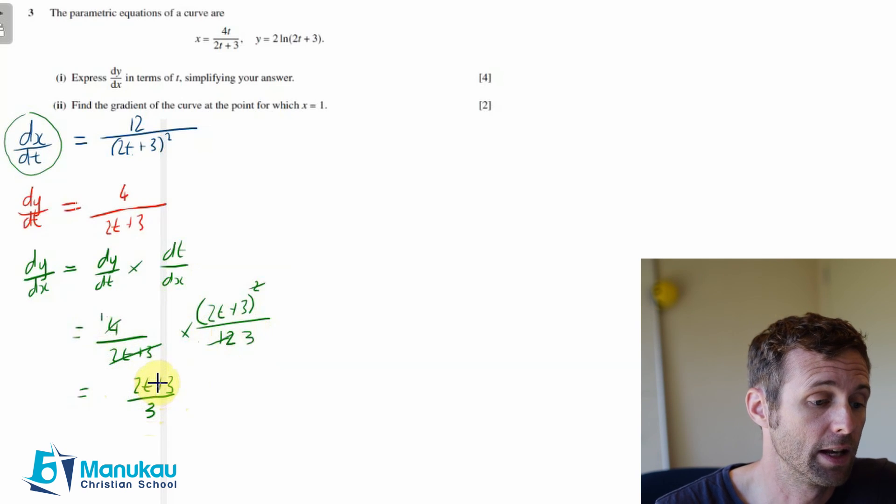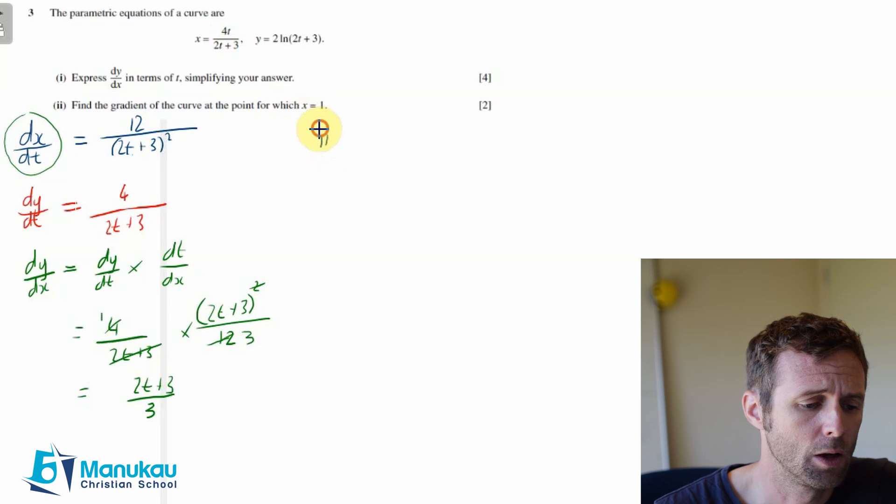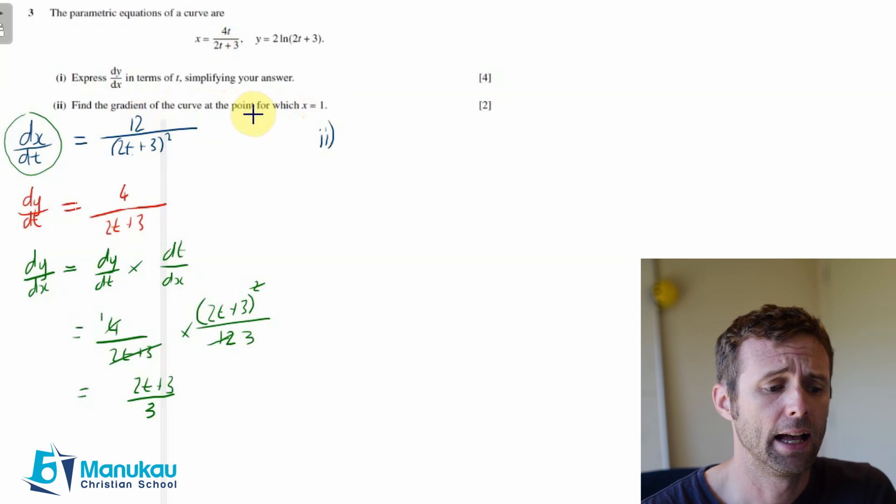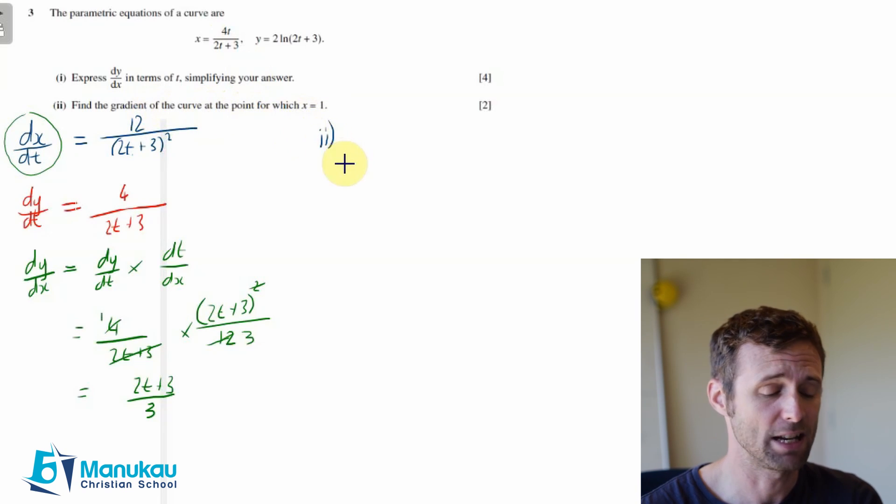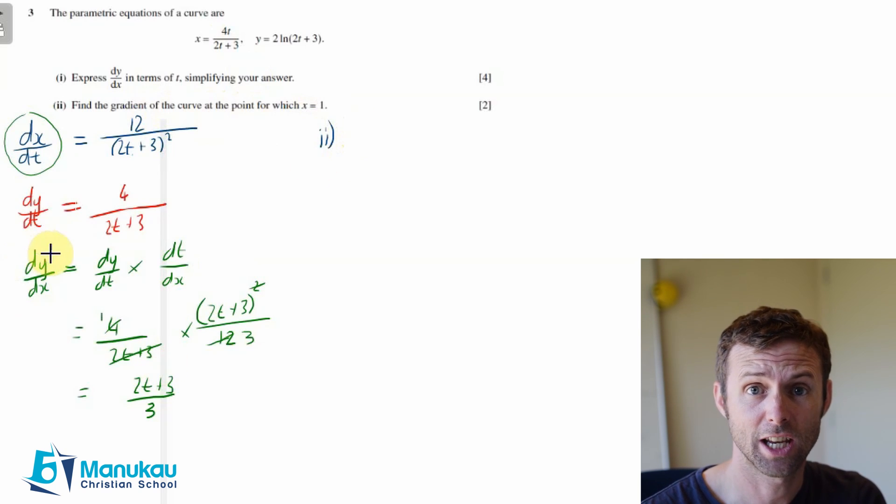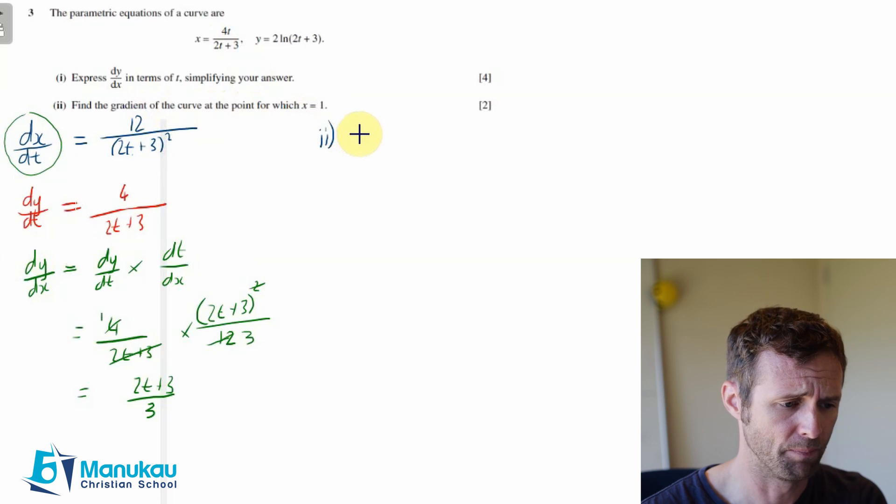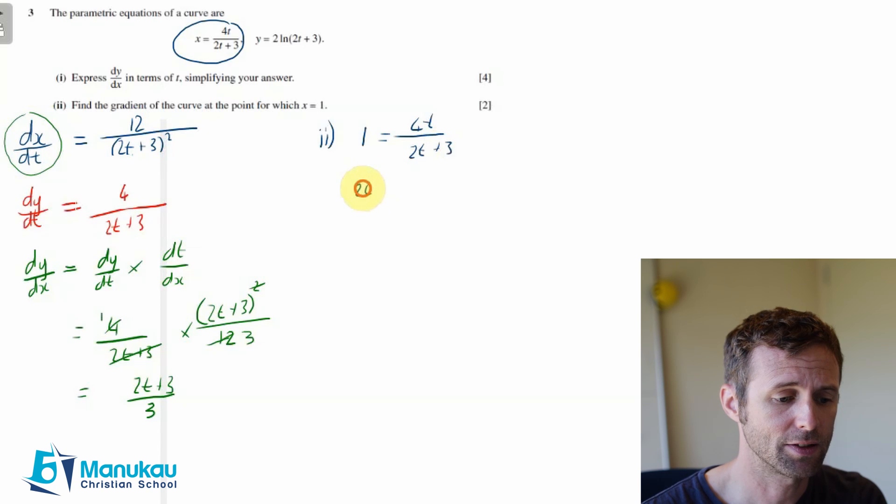Now let's move on to part 2. In part 2 we're finding the gradient of the curve at the point where x equals 1. Since the gradient function is in terms of t, I need to find what is t when x equals 1. So I'm going to use this equation: 1 equals 4t over (2t plus 3), and so 2t plus 3 equals 4t, so 3 equals 2t, and t is therefore equal to 3 halves.